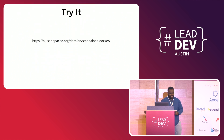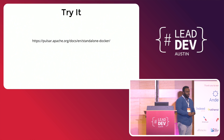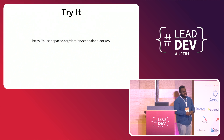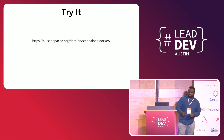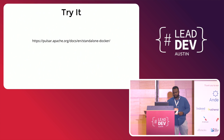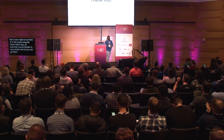You can try Pulsar. One of the things I really like about it relative to Kafka is that it was made to run in a cloud-native way. Spinning it up on Docker is very simple. So you can go there and try it. Thank you, that's all I have.